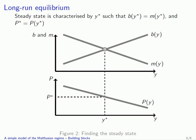To represent this model graphically, we need to use a graph that links two different subgraphs. On the upper part of the graph, we'll have the fertility rate and the mortality rate as a function of income per capita — so b(y) is an increasing function and m(y) is a decreasing function, hence the two curves on the graph. On the lower part of the graph, we have population represented as a function of income per capita, which represents the decreasing relationship between population and income per capita.